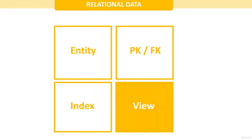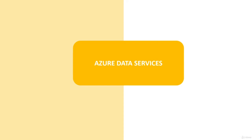A view is a virtual table — it doesn't get created physically inside the database. The view is based on the result of a query that can reference one or more tables. You can filter a view the same way as a table and also use it to join it to other tables.